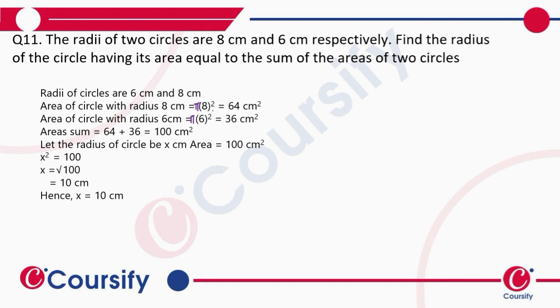Now the areas of these two circles will be 64π and 36π. So the sum of these two will be, taking π common, 100π.